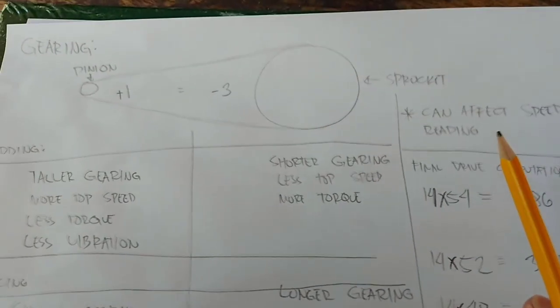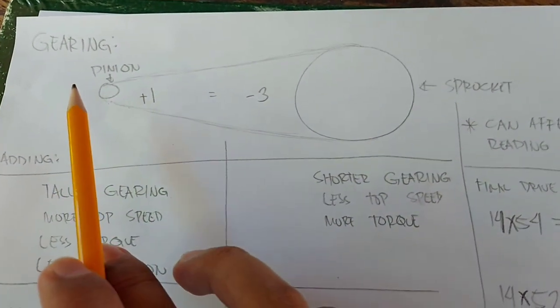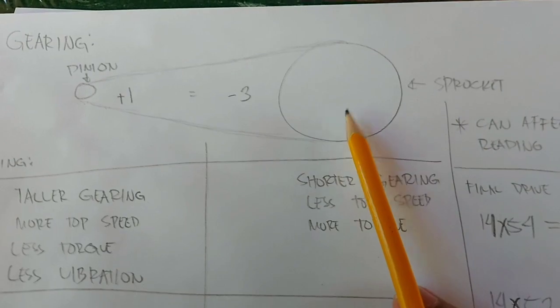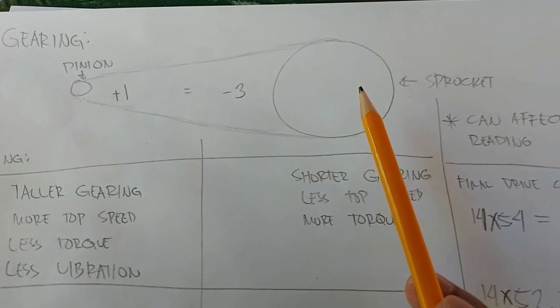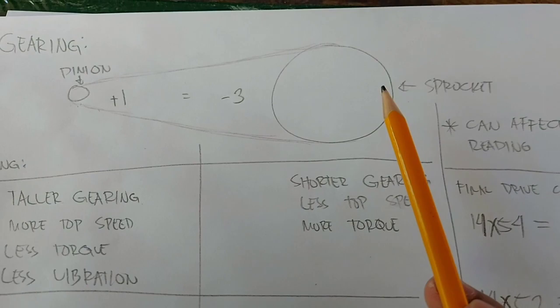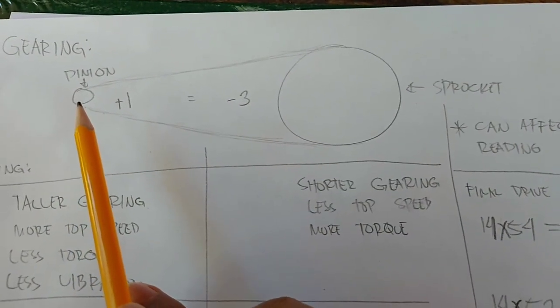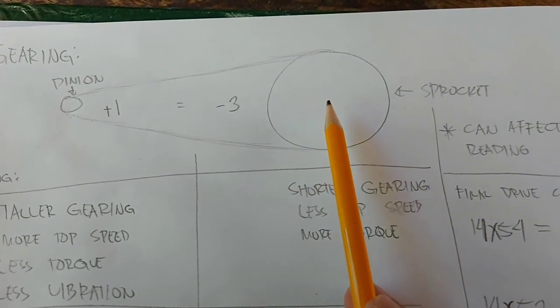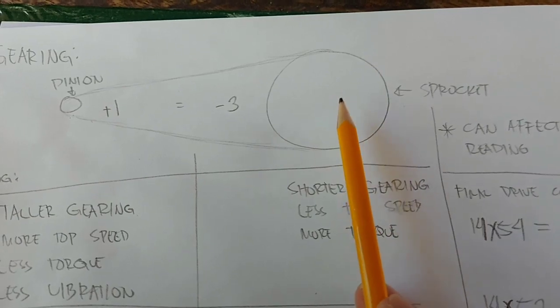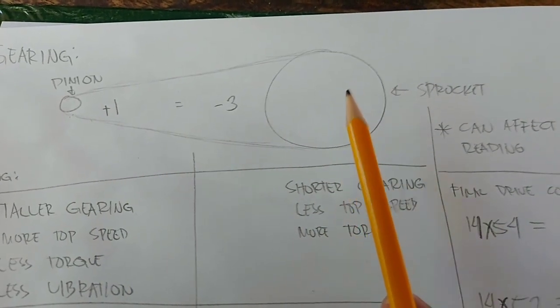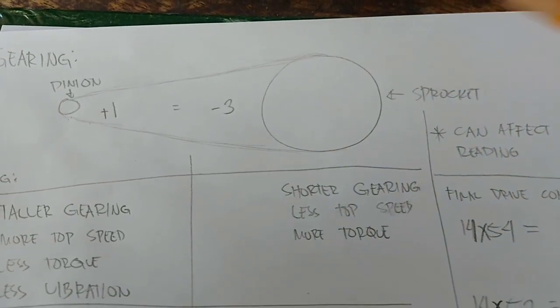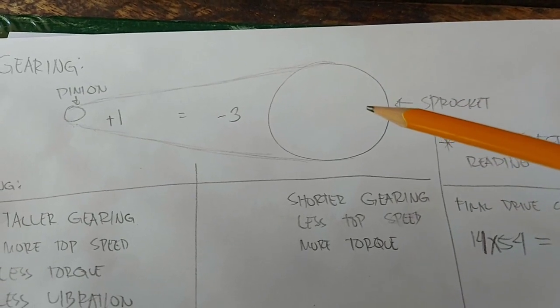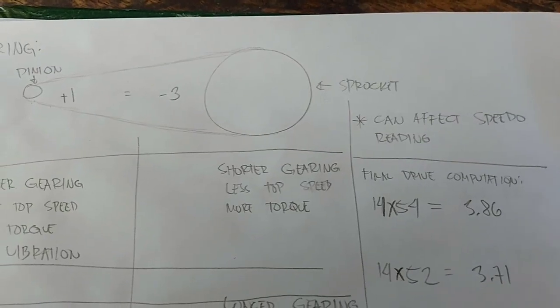Also, take note that it's easier to plus 1 or minus 1 on the pinion compared to minus 3, minus 4, minus 5 on the sprocket, because you don't need to remove chain links when changing the pinion. You only need to adjust the axle adjustment on your swing arm. Whereas, if you change the sprocket with a big difference in teeth, you'll need a longer chain or need to remove chain links.